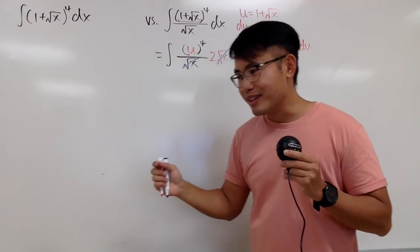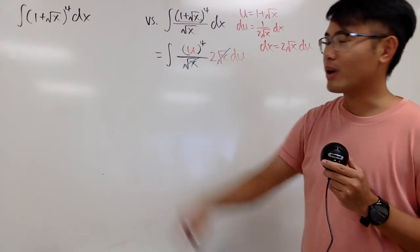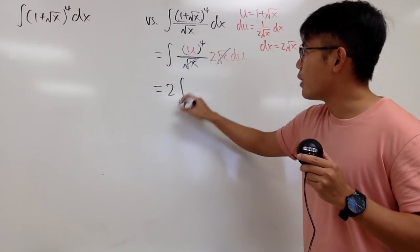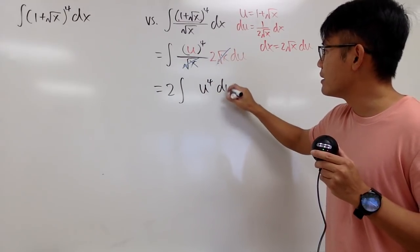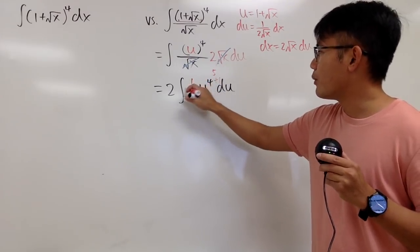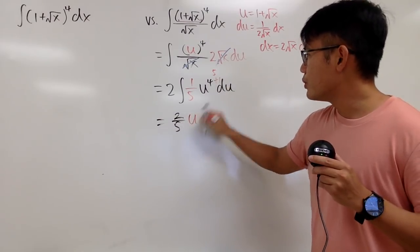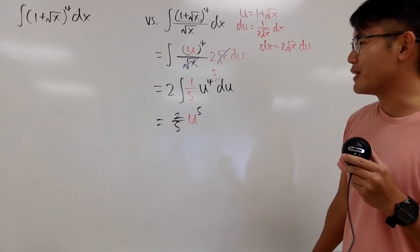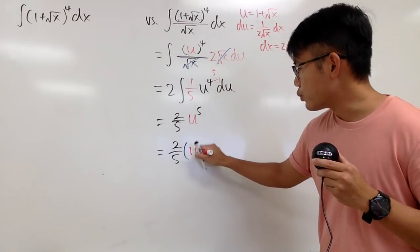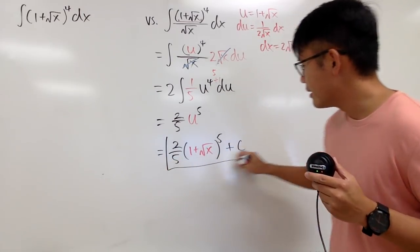Bringing the 2 to the front, we have the integral of u to the fourth power du. We add 1 to the power — 4 plus 1 is 5 — and divide by the new power, giving 1 over 5. So 2 times 1 over 5 is 2 fifths, and we have u to the fifth power. Back-substituting, the final answer is 2 over 5 times (1 plus square root of x) to the fifth power, plus C.